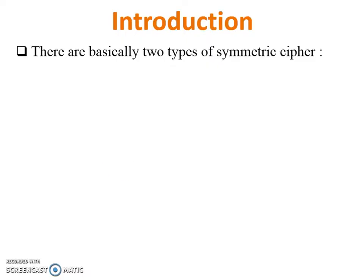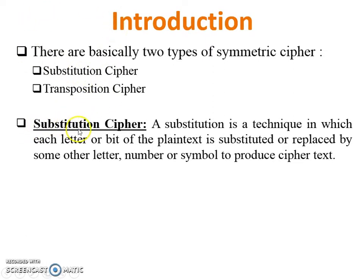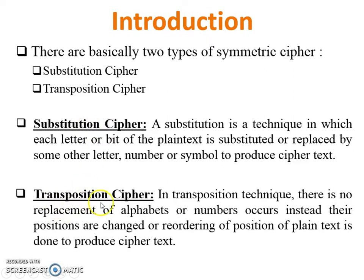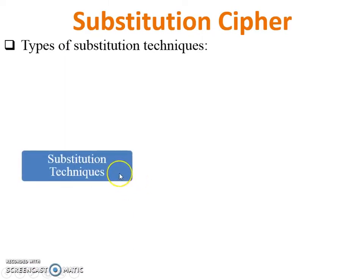There are two types of symmetric cipher. The first one is substitution cipher and the second one is transposition cipher. Substitution cipher — as the name suggests — means one letter is substituted with another letter, one number with another number, or one symbol with another symbol. Transposition cipher — as the name suggests — does not involve substitution; it just changes the position of given letters or numbers.